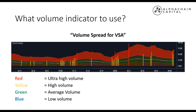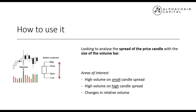I recommend pulling that indicator up if you haven't already. So how can we use this volume indicator with our price candlesticks? What we're looking to analyze is the spread of the price candle — between the close and the open — compared to the size of the volume bar. Here we can see high volume on a green candle with a small candle spread. We can safely say there is considerable selling pressure coming into that green candle, almost matching the buying volume, which reduces the candle spread and causes high relative volume compared to previous candles.